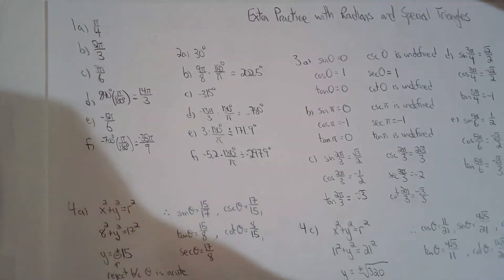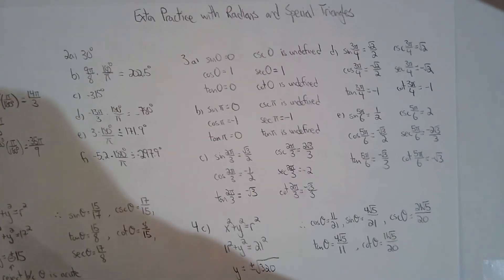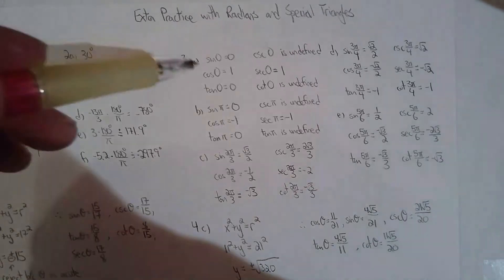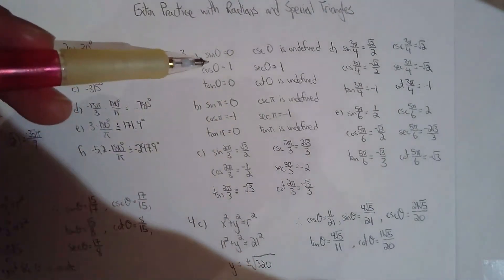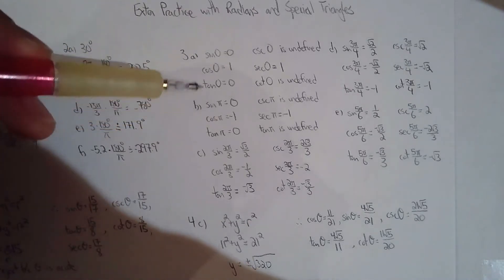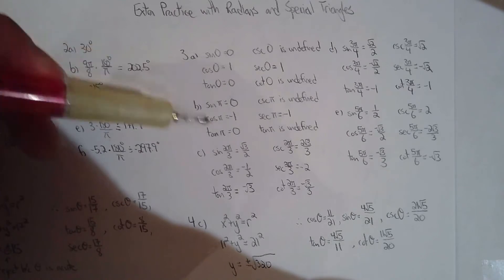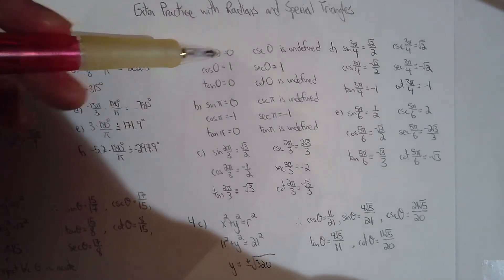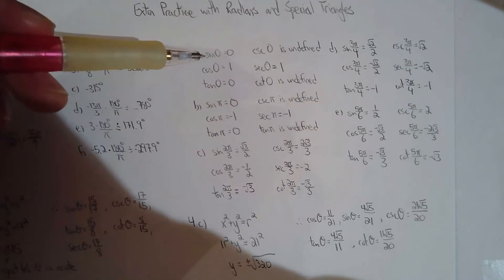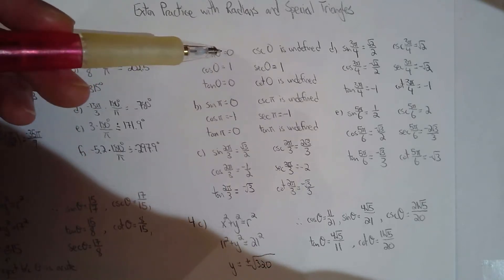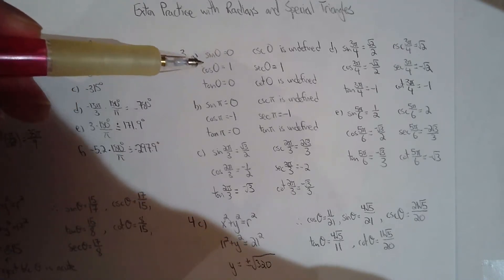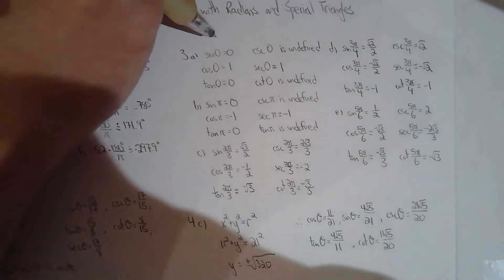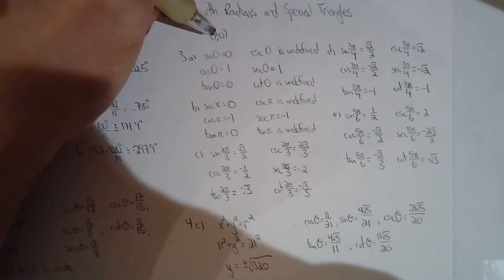For question three they're asking us to state the exact value of six trig ratios given the angle. It was pretty repetitive. Now for zero radians and π radians you don't have a reference angle because those are quadrantal angles, so you can refer to the unit circle. For example, if it was zero radians the point on the unit circle I'm working with is (1, 0).